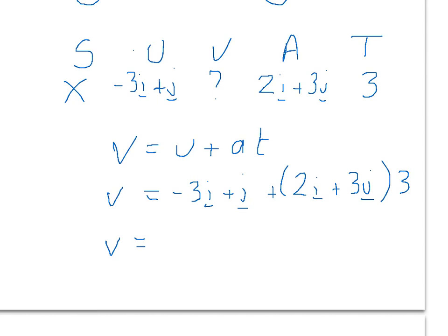We expand the bracket first. So the start bit stays the same. 2i times 3 is 6i. And 3j times 3 is 9j.